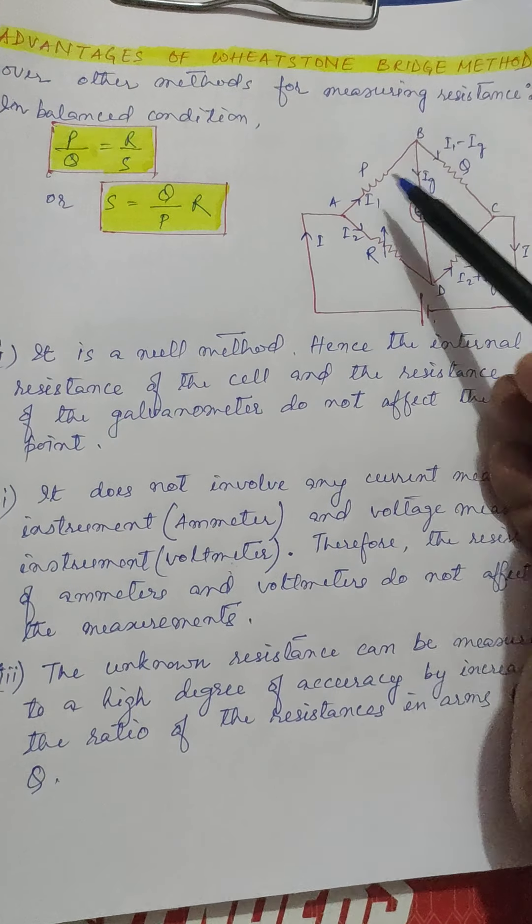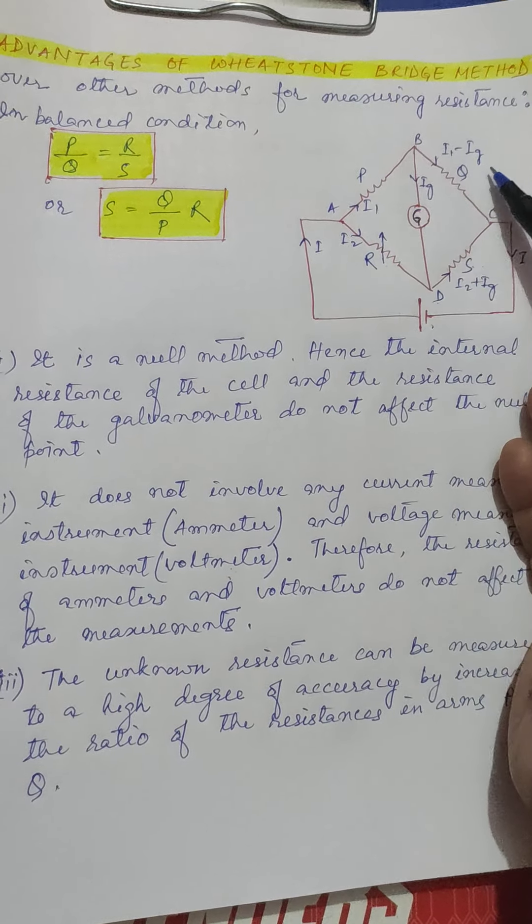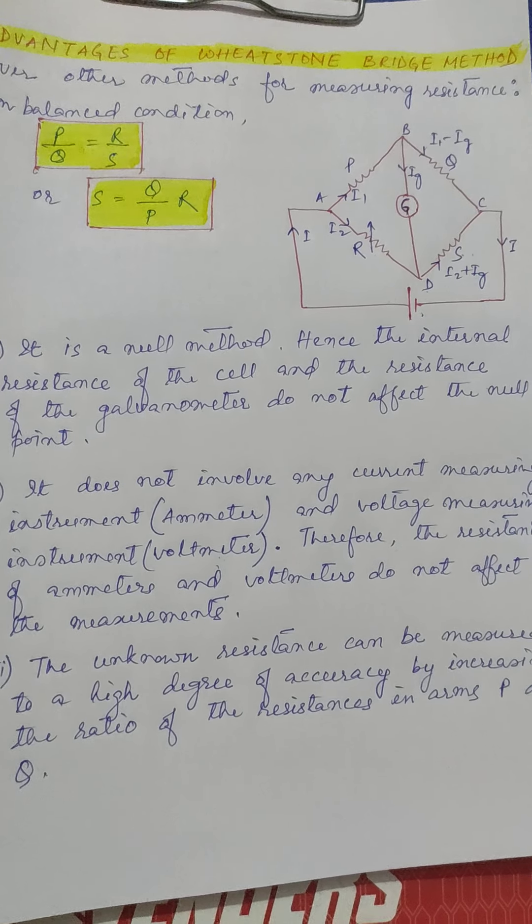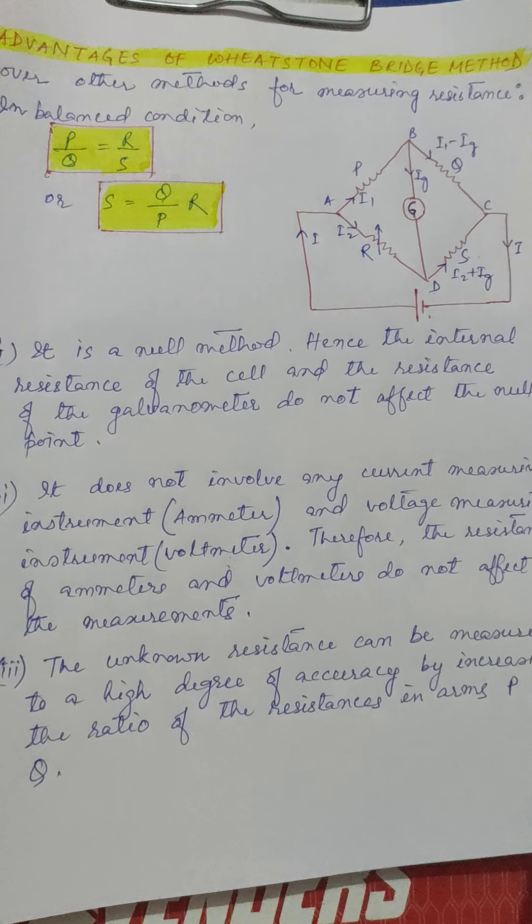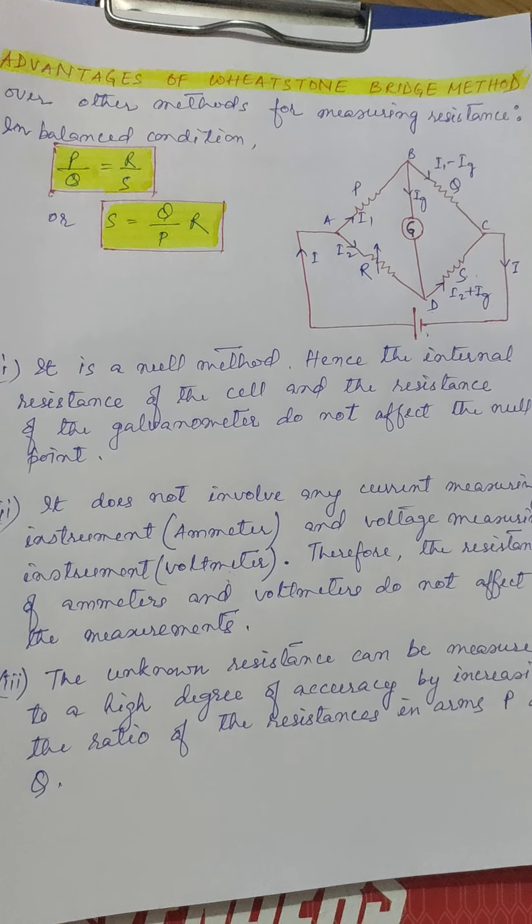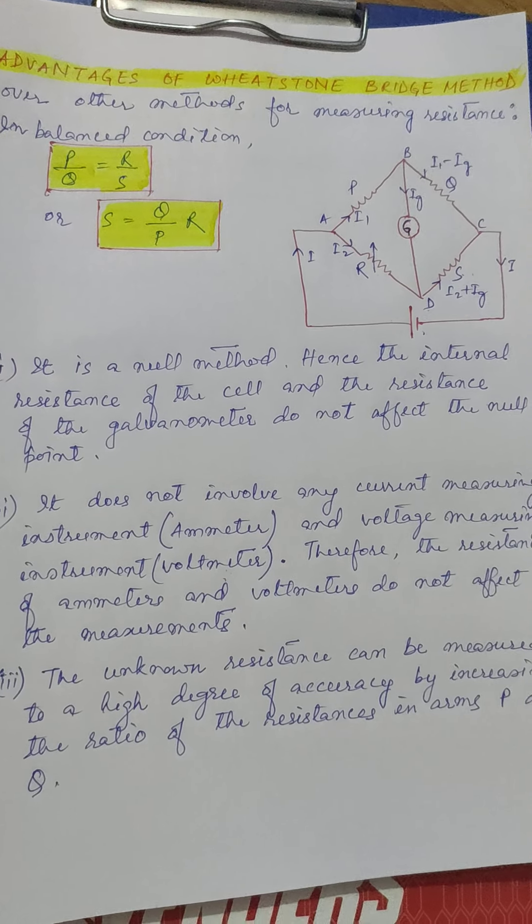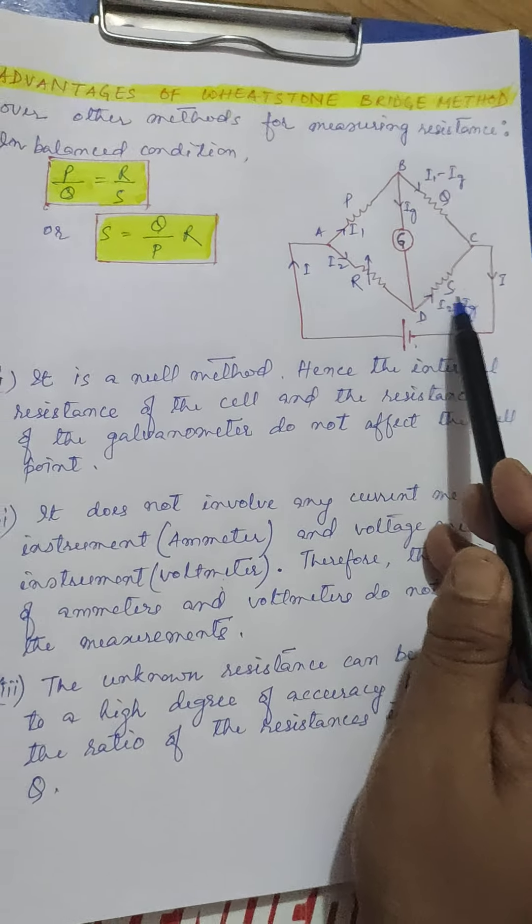we can actually increase the accuracy of the measurement of this unknown resistance. So the value of P is kept much greater than Q. So that is another way so that we actually get a highly accurate result of the unknown resistance.